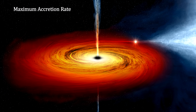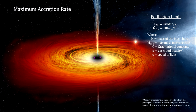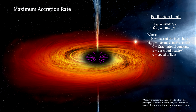Arthur Eddington, the astronomer who first captured the bending of light by the Sun that supported Einstein's general relativity theory, proposed that for any object in the depths of space, there is a maximum luminosity beyond which radiation pressure will overcome gravity, and material outside the object will be forced away from it rather than falling inwards. This maximum is now called the Eddington luminosity, and it puts a limit on how fast matter can flow into a black hole, now called the Eddington limit.